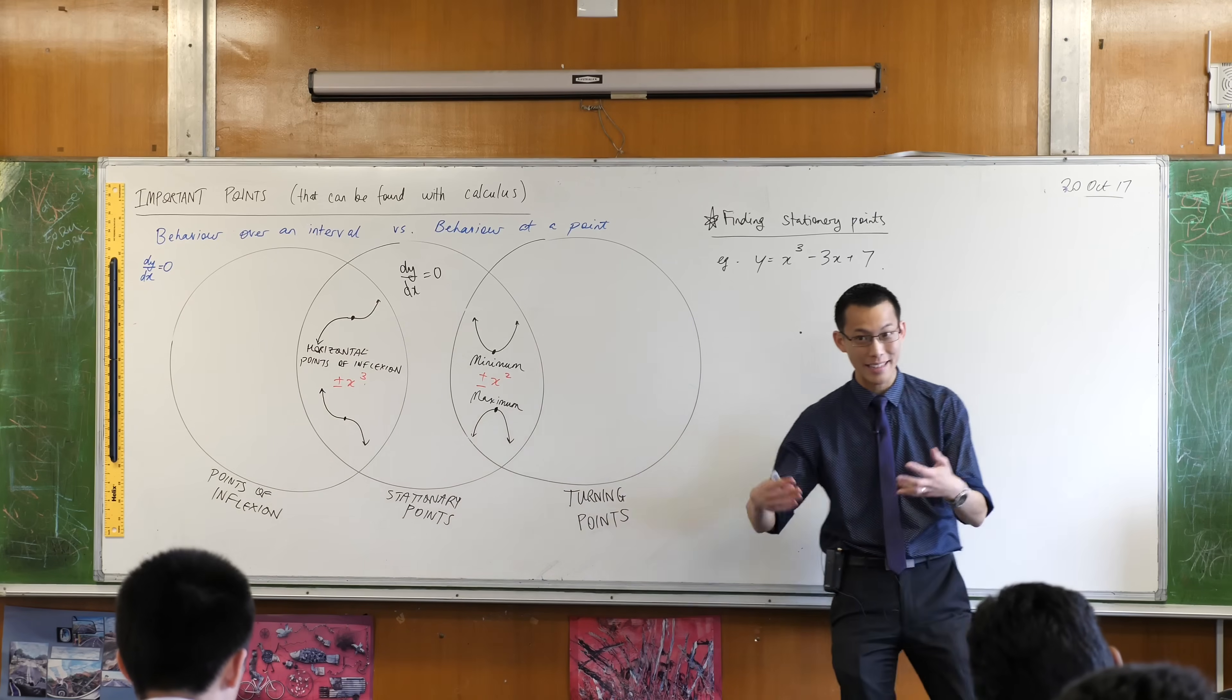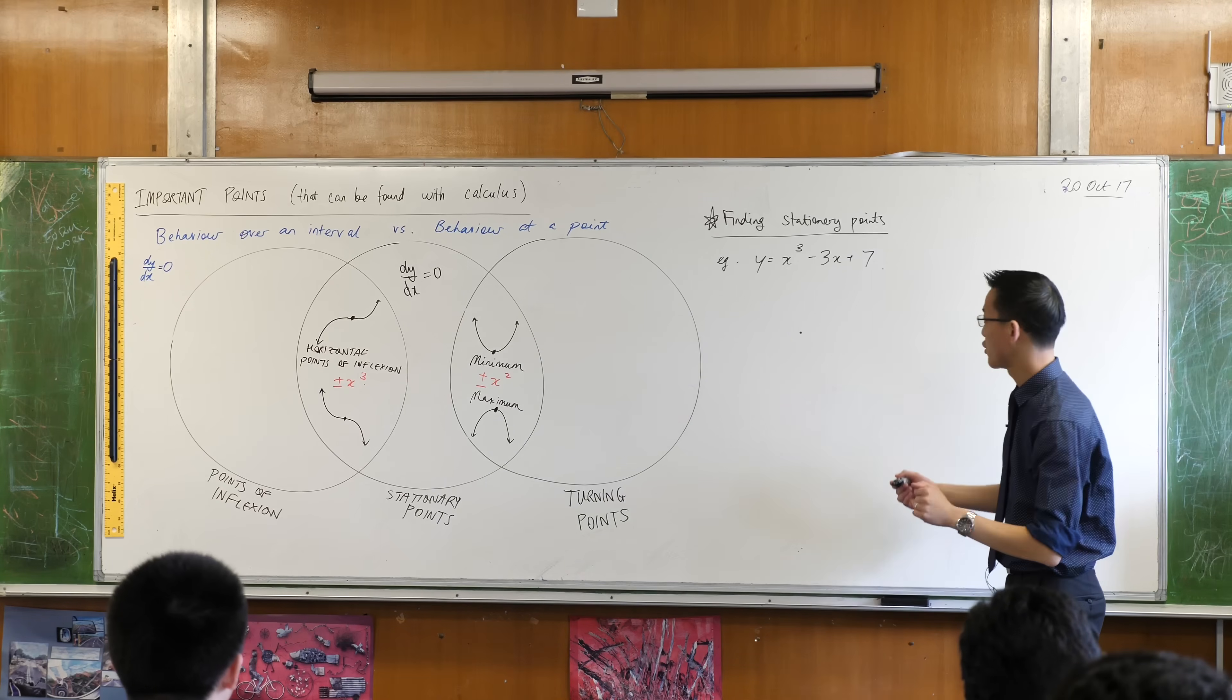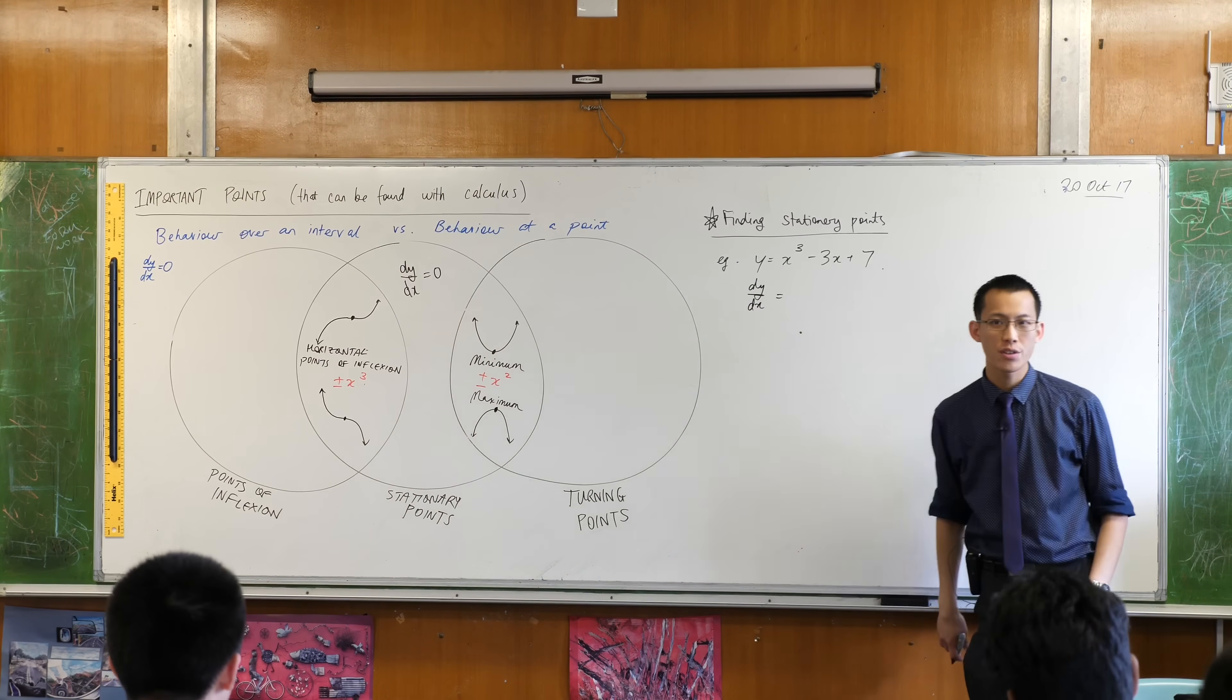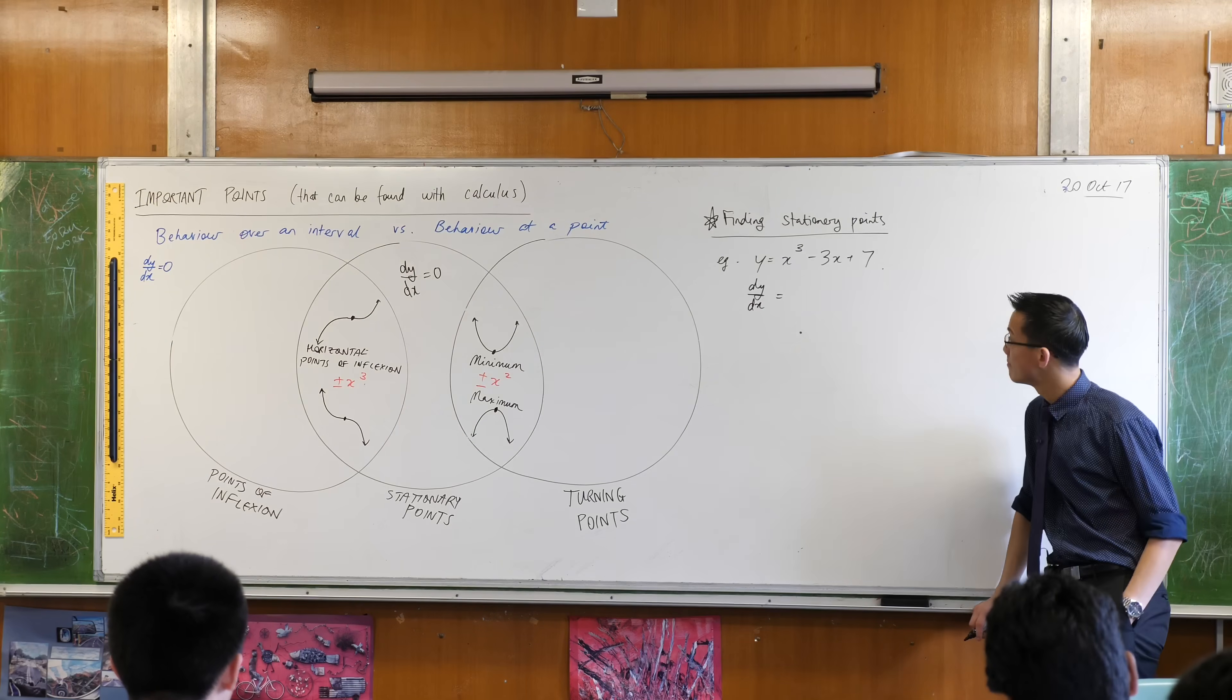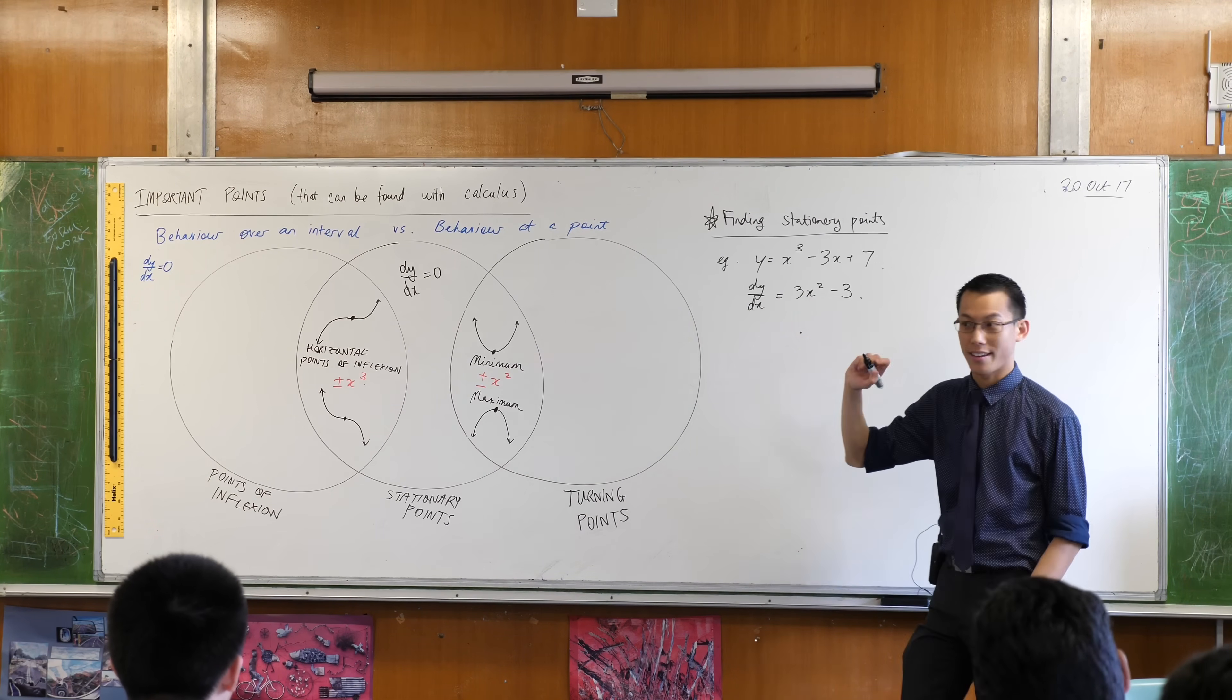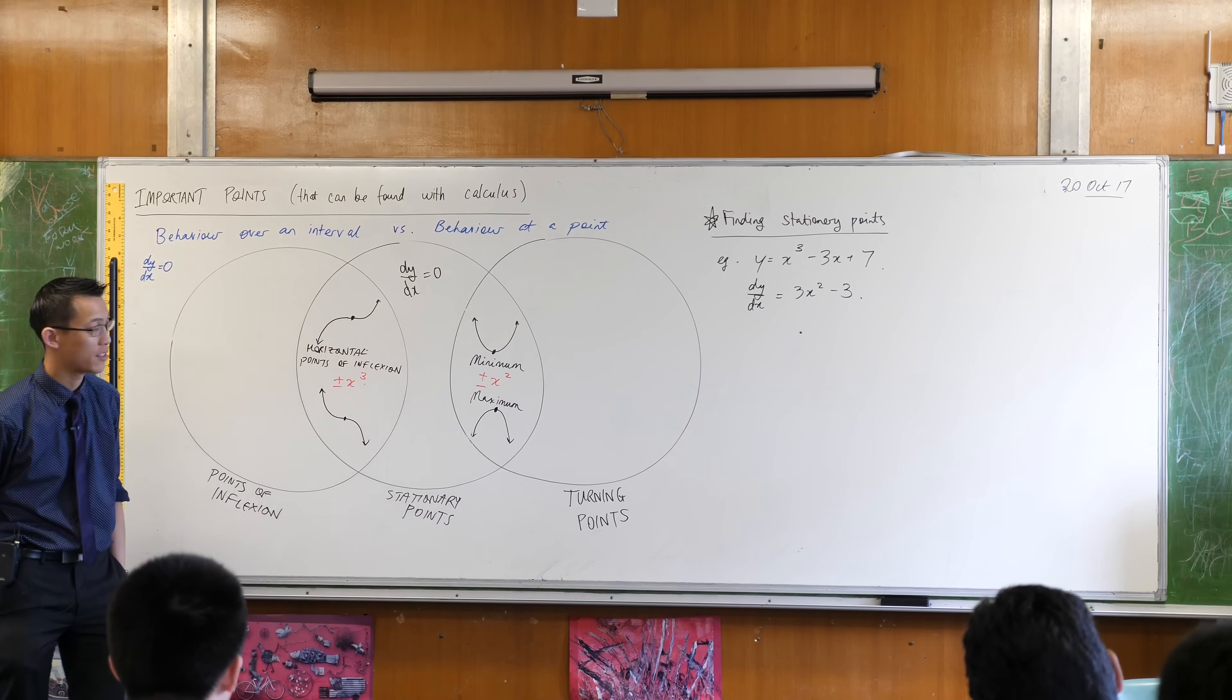First, because we're in calculus land, instinctively what would you do? You should differentiate. So let's do that. I have a derivative 3x² minus 3. Okay I have a derivative 3x² minus 3. Power law looks like it's worked out just fine.